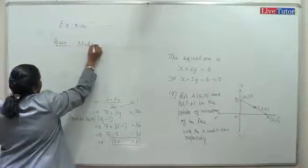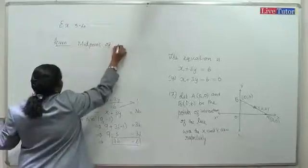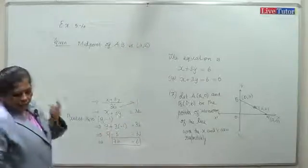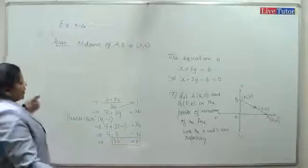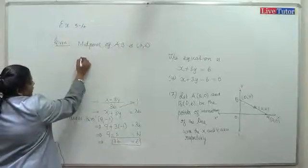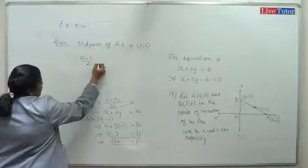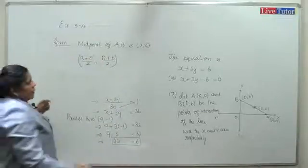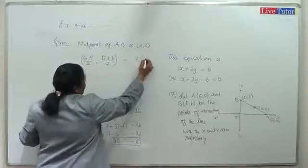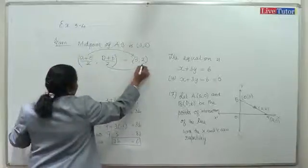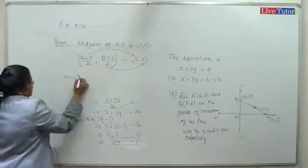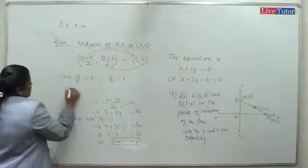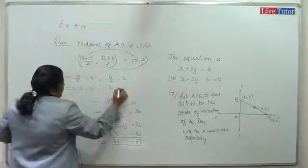Given midpoint of A and B is (3, 2). Using the midpoint formula: (a + 0)/2 = 3 and (0 + b)/2 = 2, which implies a by 2 equals 3 and b by 2 equals 2, therefore a equals 6 and b equals 4.